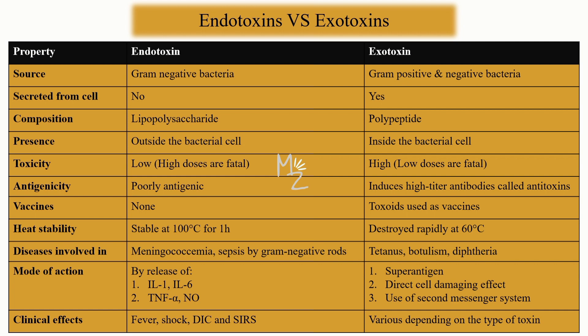Antigenicity is the ability of an antigen to induce an immune response in the human body. The antigenicity of endotoxin is poor — it is poorly antigenic. Exotoxin, on the other hand, induces high titers, meaning high concentrations of antibodies called antitoxins.